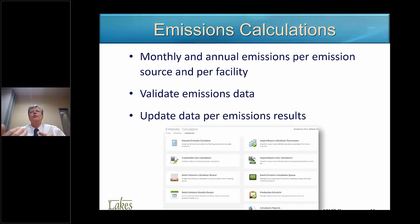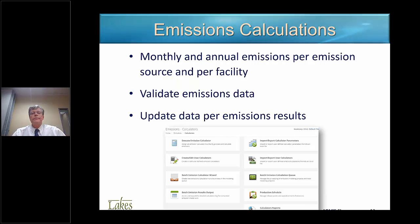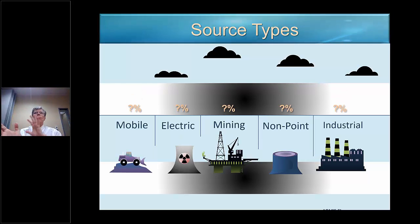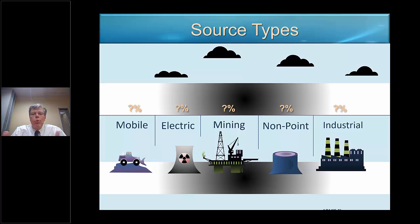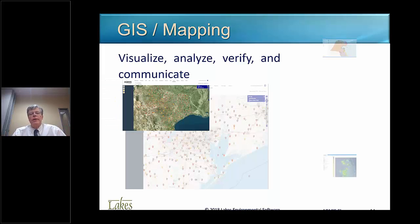For emissions calculations, you can use predefined calculators and you can also create your own calculation method very easily. Mr. Michael Johnson on the live demo will show you how this is done. We can segregate all the emissions by source type — that is mobile, on-road, non-road, power and electric generation, mining, area sources like non-point sources that are too small to be accounted as a single major source, and industrial sources. Everything can be sliced and diced for a better understanding.